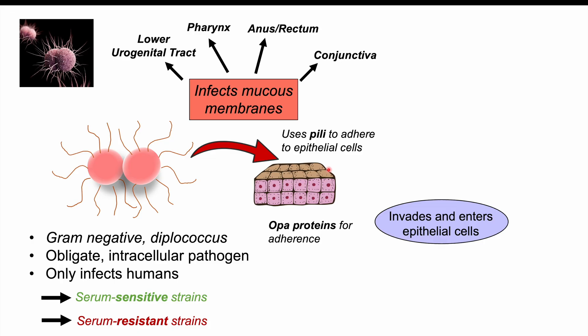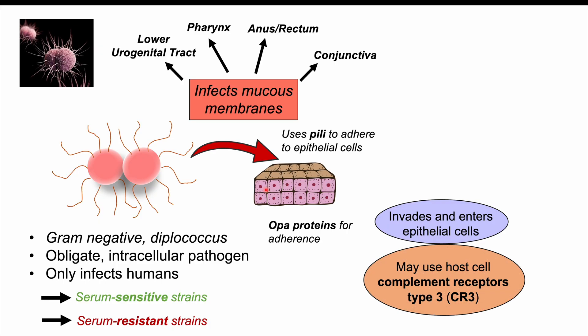When the bacteria use pili to attach to epithelial cells, they also have what are called opacity-associated proteins, or OPA proteins, on their cell surface. They use these to adhere and to enter or invade into those epithelial cells. Depending on the host cell — for instance, an epithelial cell in the cervix — they can use host cell complement receptors type 3, or CR3, as a potential gateway into that host cell.